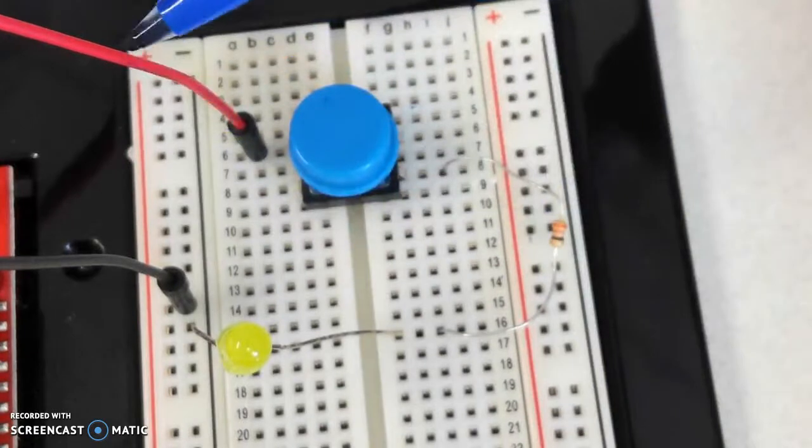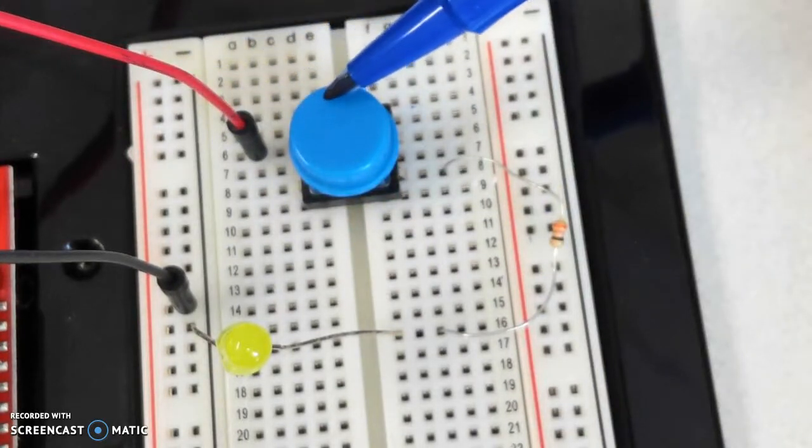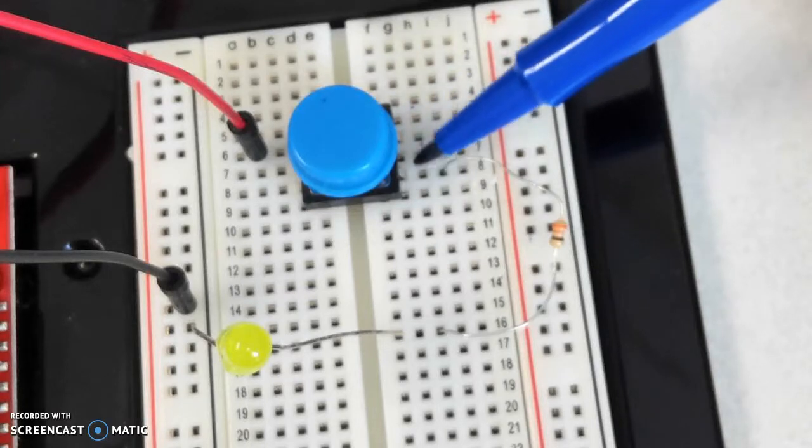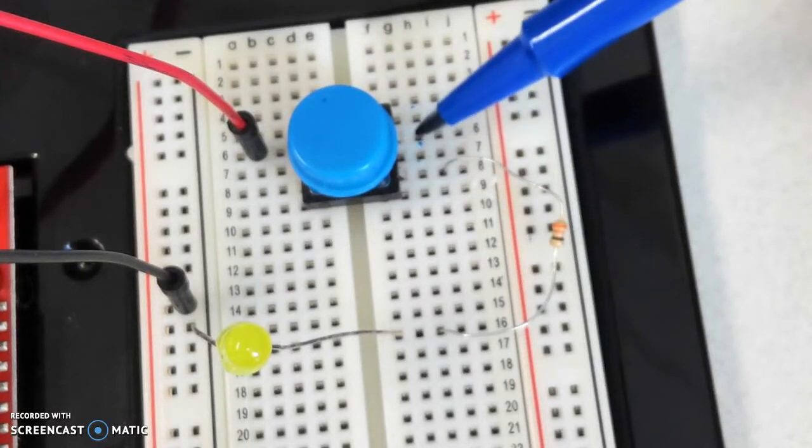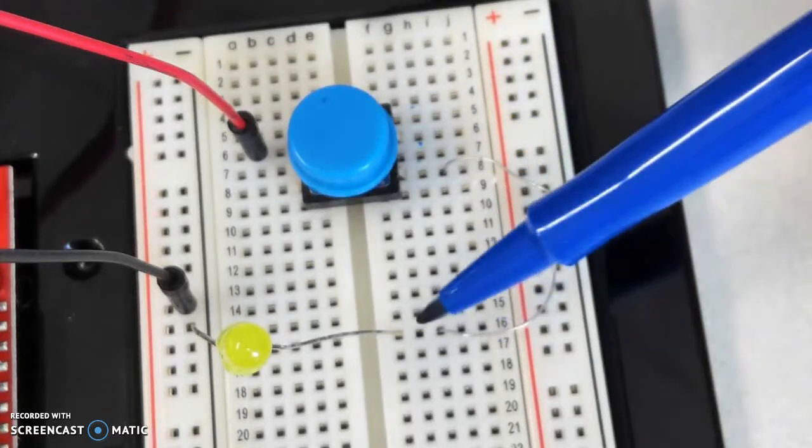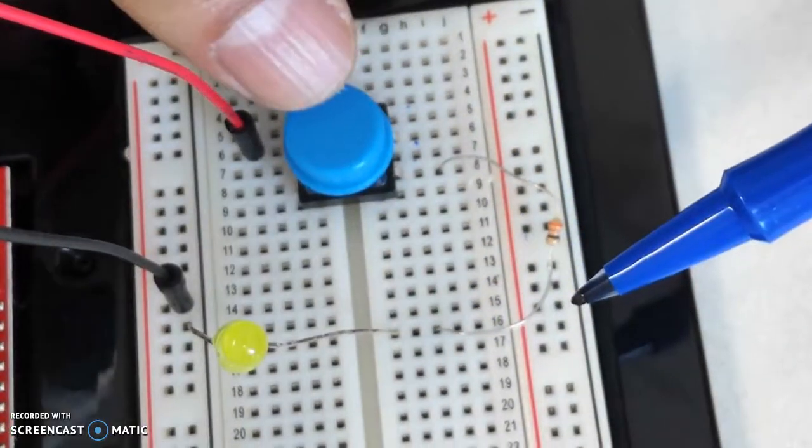Current is coming through, it's going to the top part of the switch. The switch is normally open so there's no path for the current to flow to this leg of the resistor. So the LED is off. Now when I press this button.